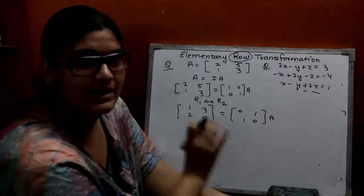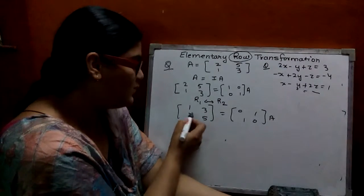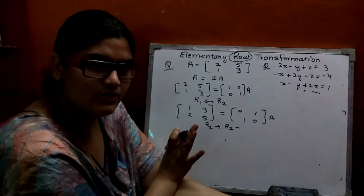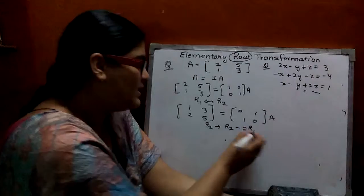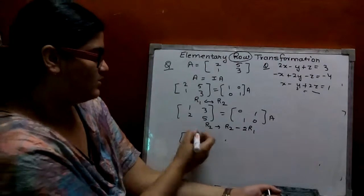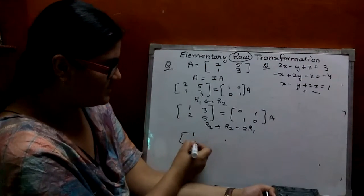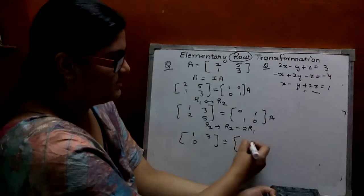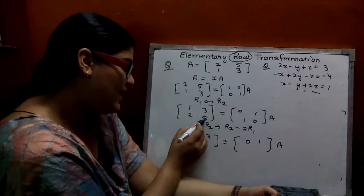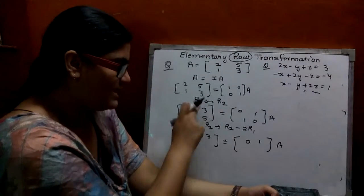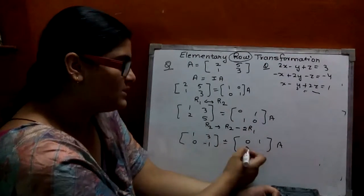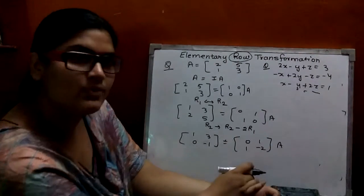Now make 0 here. For R2, if we subtract R2 from twice of R1, 2 minus 2 gives 0. R1 remains as it is. For R2: 2 minus 2 is 0, 5 minus 3 times 2 gives minus 1. And 1 minus 2 times 0 is 1, 0 minus 2 times 1 is minus 2.